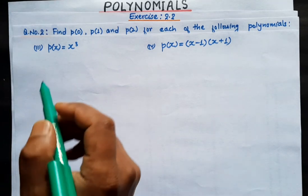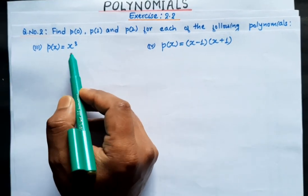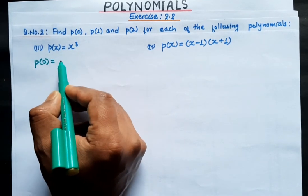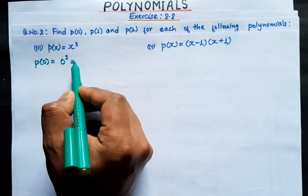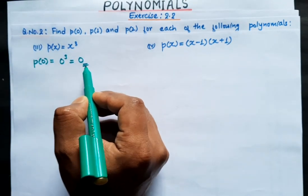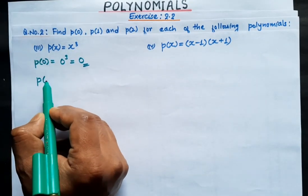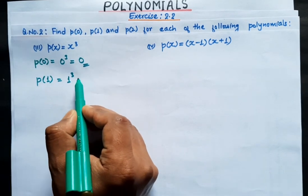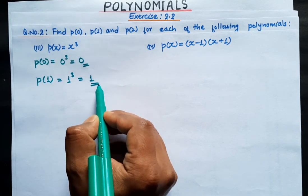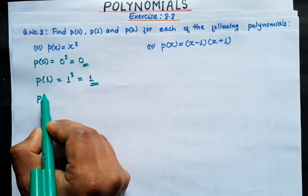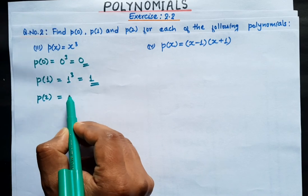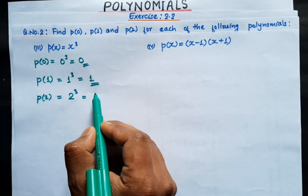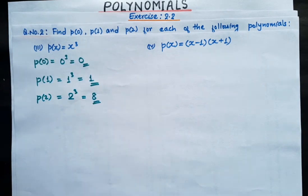Now question number 3: p(x) = x³. For P0: 0³ = 0 × 0 × 0 = 0. For P1: 1³ = 1 × 1 × 1 = 1. For P2: 2³ = 2 × 2 × 2 = 8. So the three values are 0, 1, and 8.